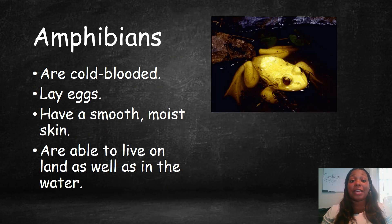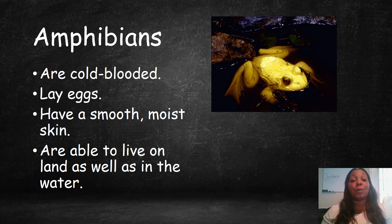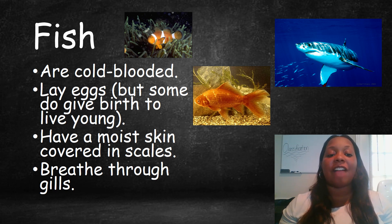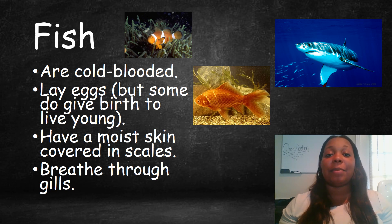Now we have amphibians. Amphibians are cold-blooded, they lay eggs, they have smooth, moist skin, and are able to live on land as well as in water. An example of an amphibian is a frog. Fish are also cold-blooded, lay eggs — though some do give birth to live young — have moist skin covered in scales, and breathe through gills. Some examples of fish are clownfish, goldfish, and sharks.